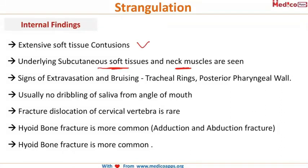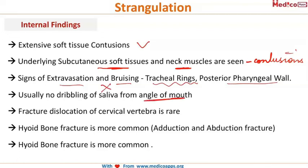The internal findings include extensive soft tissue contusions — the underlying subcutaneous soft tissues and neck muscles are seen contused. There are signs of extravasation and bruising, typically at the tracheal rings and posterior pharyngeal wall. There is usually no dribbling of saliva from the angle of the mouth, unlike in antemortem hanging, and fracture dislocation of cervical vertebra is rare in these cases.